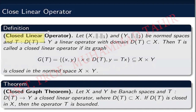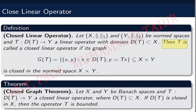Now we define a closed linear operator. Because the graph is a subset of X cross Y, which is a normed space, the graph can be either a closed set or an open set. If the graph of T is a closed set in X cross Y, we call T a closed linear operator. A closed linear operator is an operator whose graph is a closed set in X cross Y.